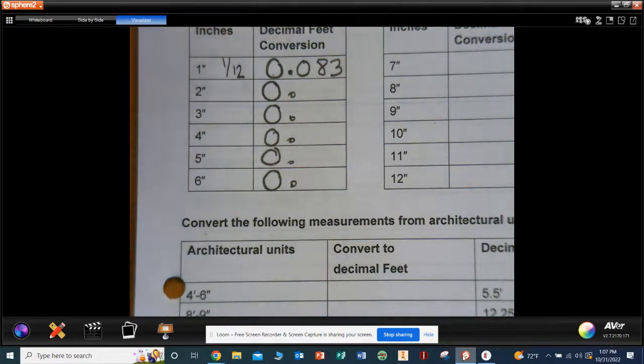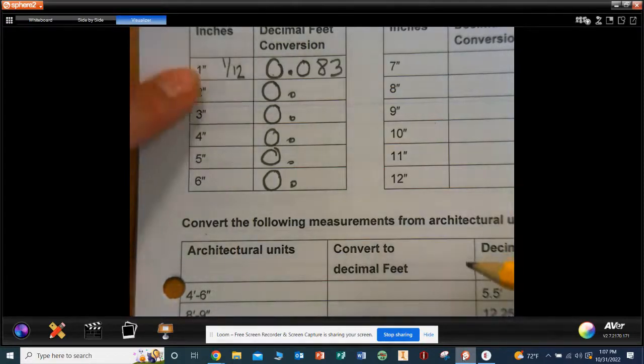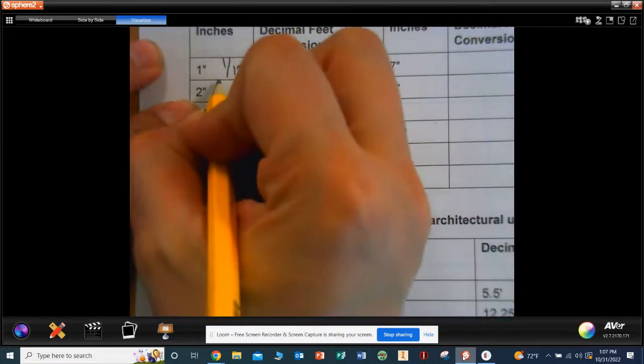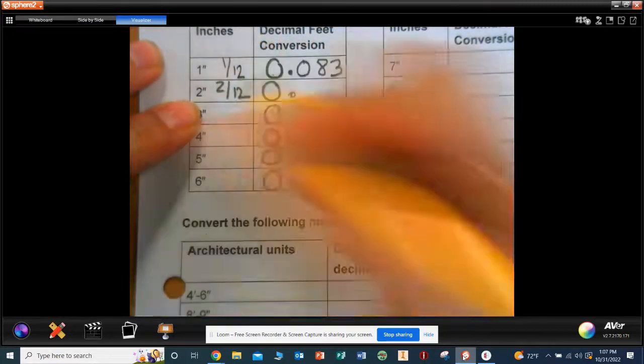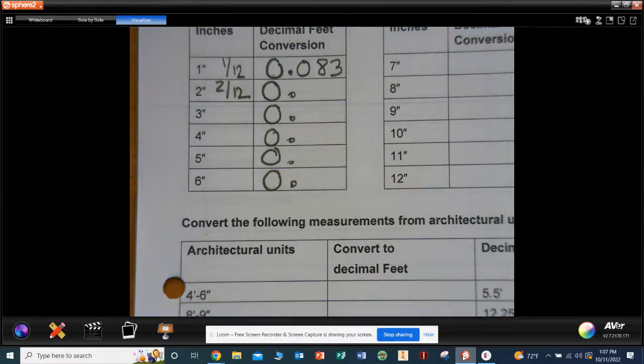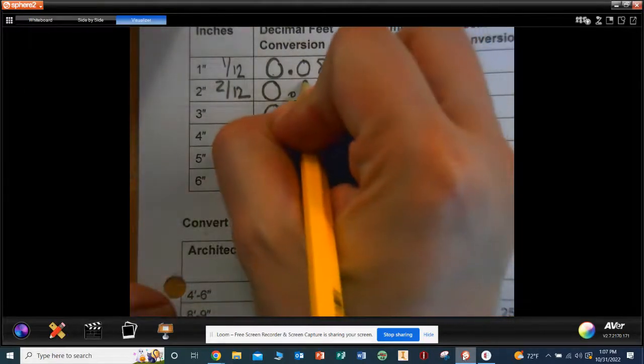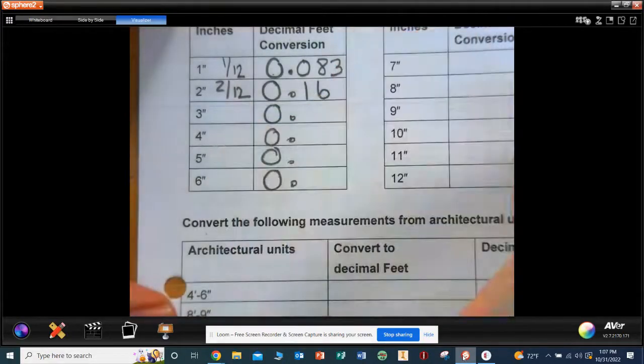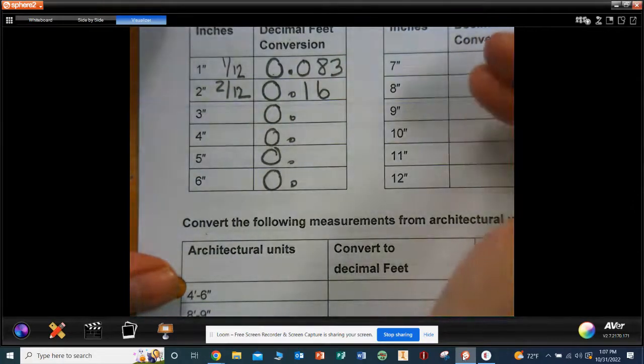All right, number two, what's my fraction? 2 over 12. What's always going to be on the bottom? 12. So type that out: 2 over 12. We get 0.166, but we're going to round. So what does the 6 tell the 6 to do?